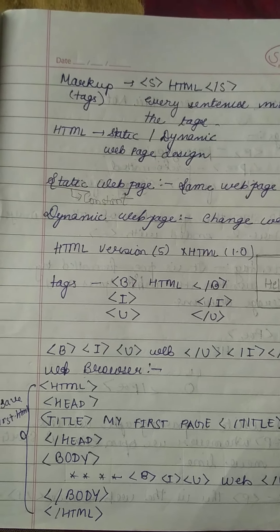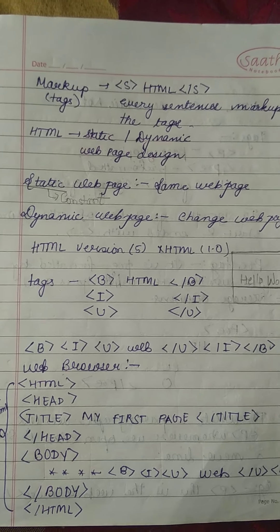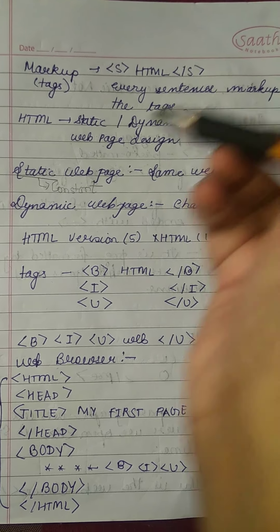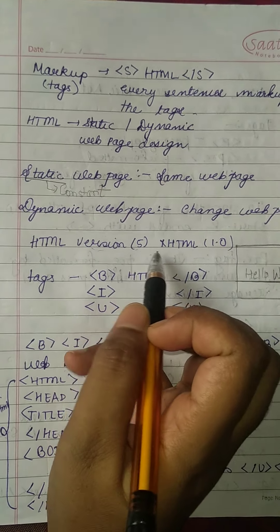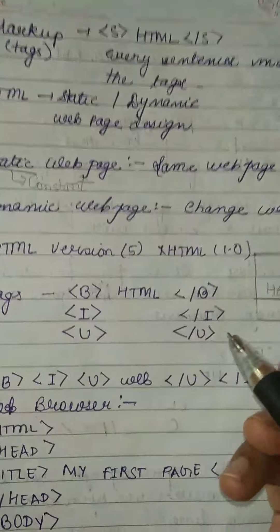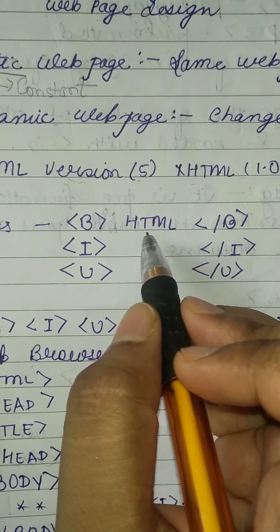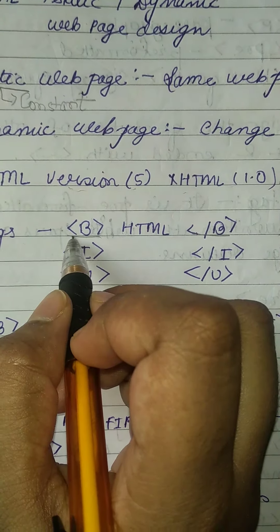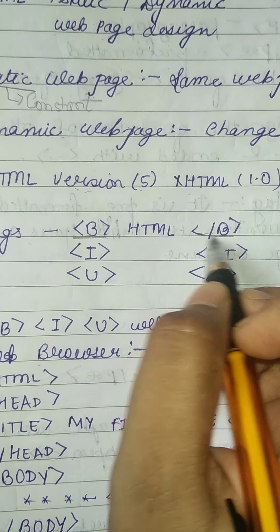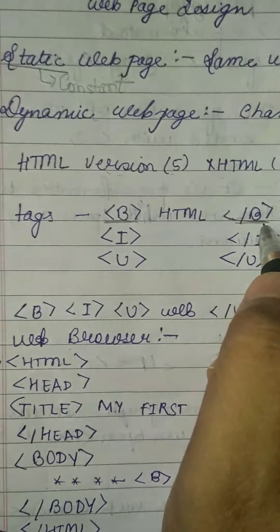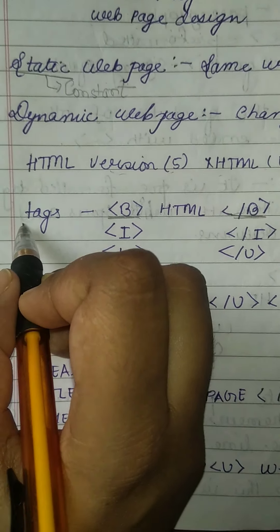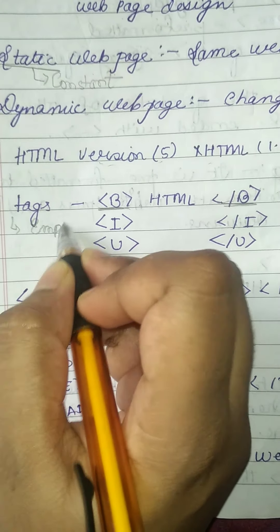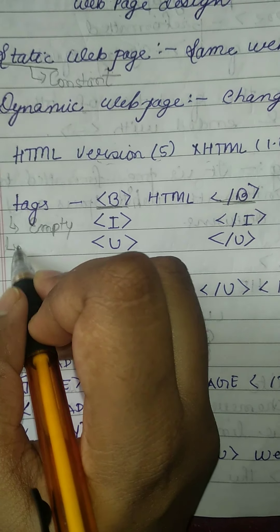We are using HTML version 5 and XHTML 1.0. In HTML, if we write the B tag, it is a starting tag, and it also has a closing tag. Basically, tags in HTML are of two types: empty tag and container tag.